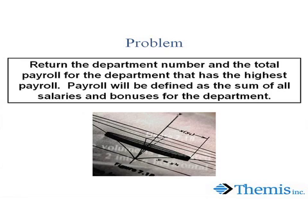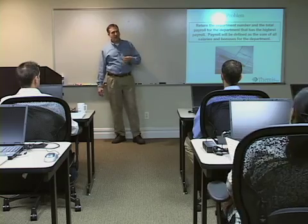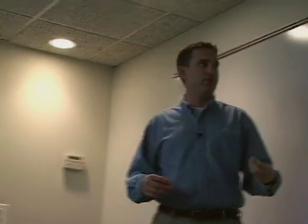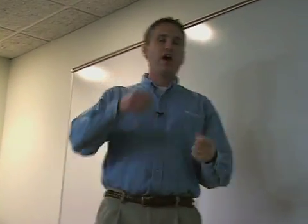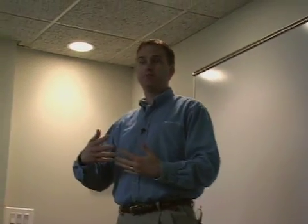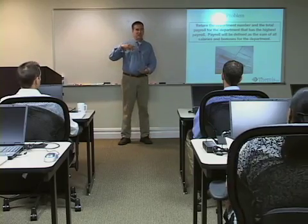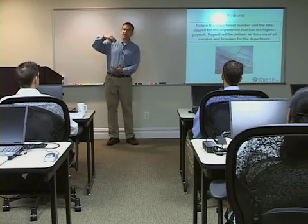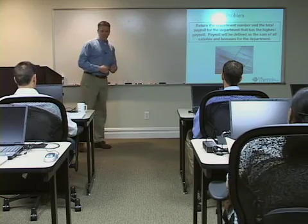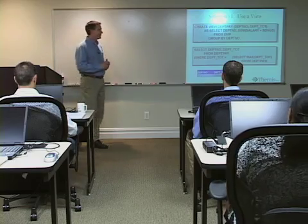Here's a problem that makes the difference between nested and common table expressions really clear: I want to find the department and the total payroll for the department that has the highest payroll. There are actually two levels of summarization — two levels of aggregation — involved. First, we have to find the total payroll for each department, which involves a SUM of salaries. Then we need to figure out which one of those is the biggest number. So we have a SUM and then a MAX on top of that SUM.